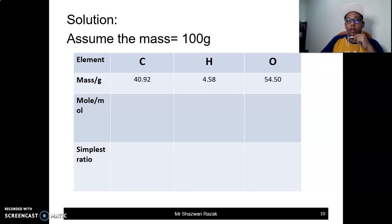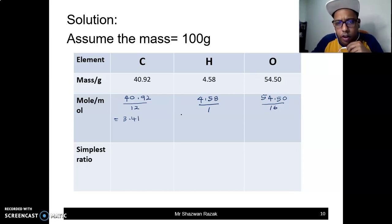Now we will calculate our mole. So 40.92 divided by 12, and then 4.58 divided by 1, 54.50 divided by 16. 40.92 divided by 12 which is equal to 3.41, and then 4.58 divided by 1 is equal to 4.58. So 54.50 divided by 16 which is equal to 3.41.